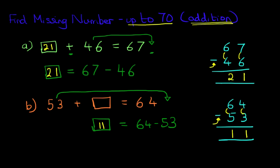It really is as simple as that. So 53 plus 11 equals 64. So that is one method of how to find the missing number for numbers up to 70 when we are looking at addition questions.